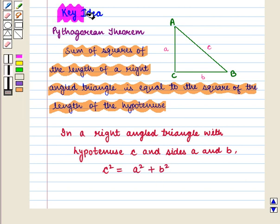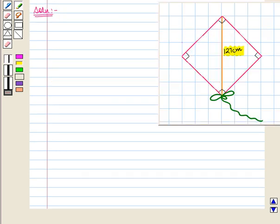With this key idea, we shall move on to the solution. In this question, we are given a square shaped kite such that the straight line from one end to the opposite end of the kite is 127 cm long, and we have to find the area of the kite.